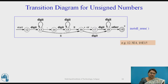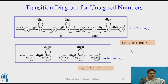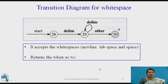The transition diagram for unsigned numbers handles examples like 12.3e4 — exponential values with fractional parts — across many states. Another transition diagram handles fractionals only, like 12.3 or 10.15, with no exponential values. Finally, there is a transition diagram for white space where delimiters such as newline, tab, or space are read — one or more white spaces are handled.